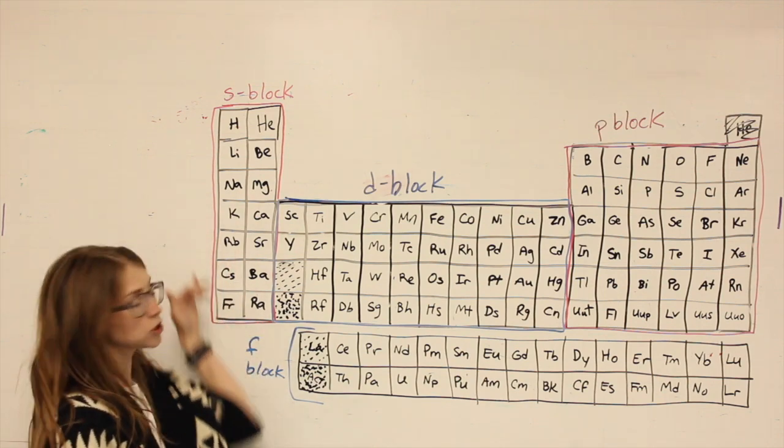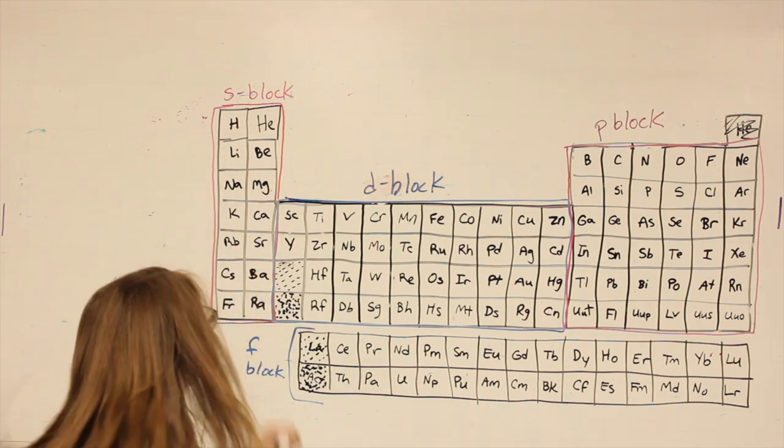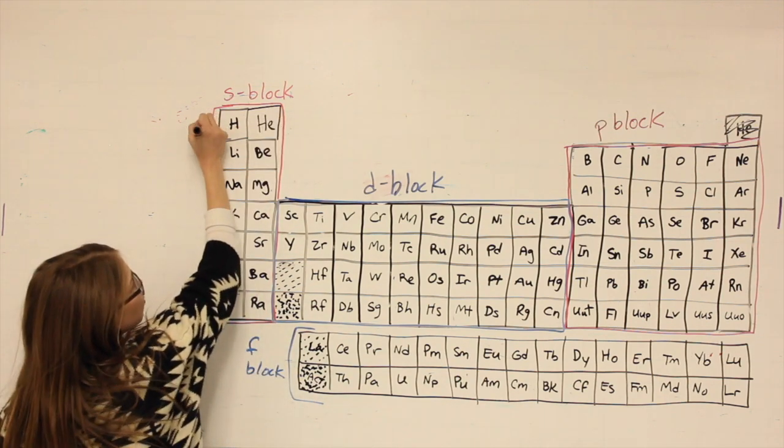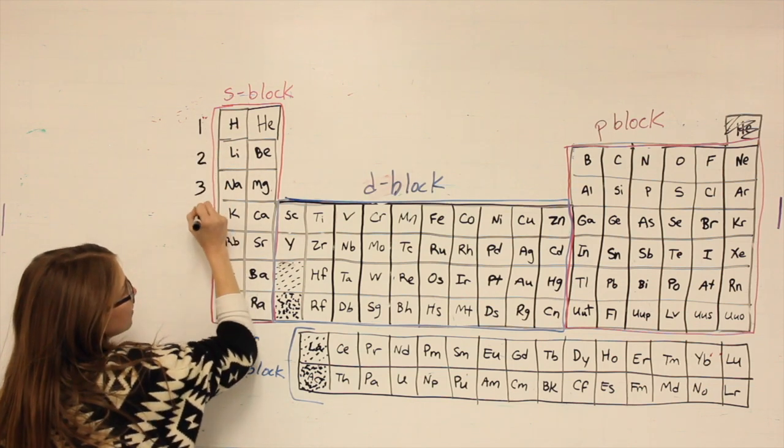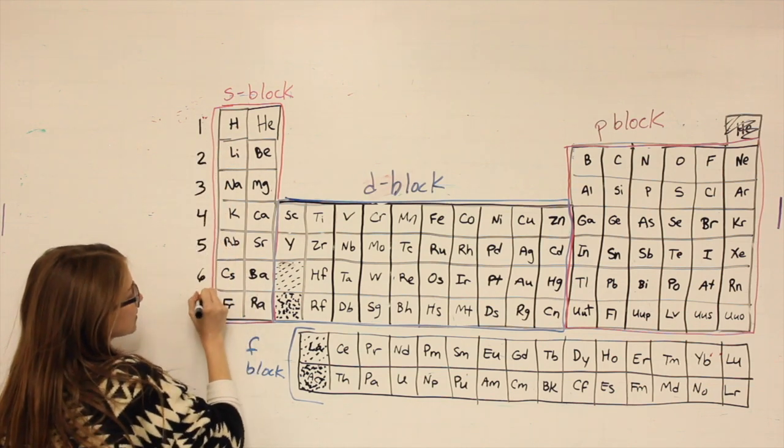Another thing that's going to be relevant is our rows. So straight across here is row one, row two, three, four, five, six, seven.